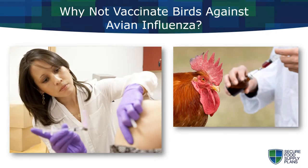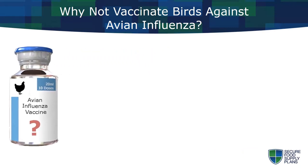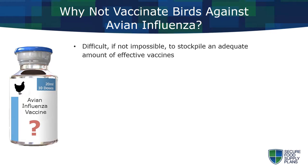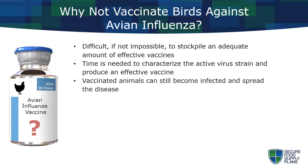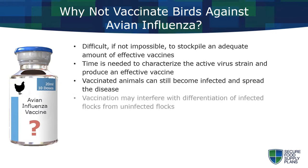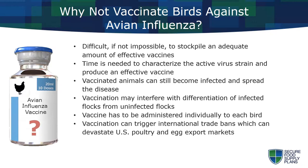A frequently asked question is: why don't we just vaccinate birds for avian influenza the same way we vaccinate people against the flu every year? There are a number of reasons why vaccination tends to be considered a tool of last resort in the United States. Because the virus is constantly mutating and there are so many virus strains, it would be difficult, if not impossible, to stockpile an adequate amount of effective vaccines. If an outbreak was being caused by a new strain, time is needed to characterize the active virus strain and produce an effective vaccine. Vaccinated animals can still become infected and spread the disease. Vaccination may interfere with differentiation of infected flocks from uninfected flocks. Vaccine has to be administered individually to each bird — it can't be given in the water or feed — making it logistically difficult to vaccinate all birds in a poultry house. And most importantly, vaccination can trigger international trade bans, which can devastate U.S. poultry and egg export markets.